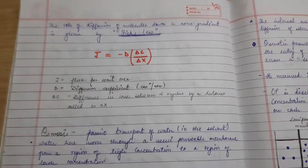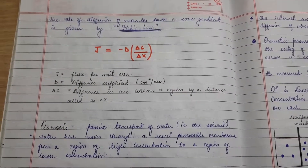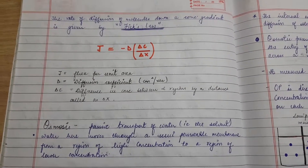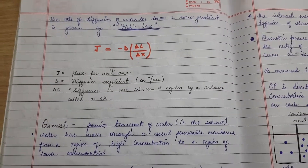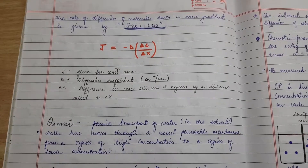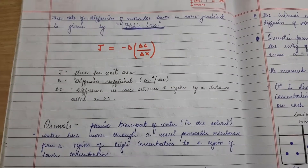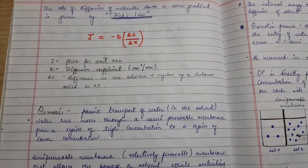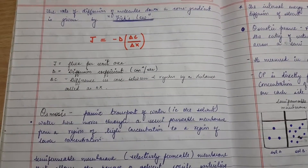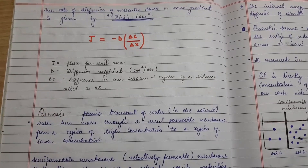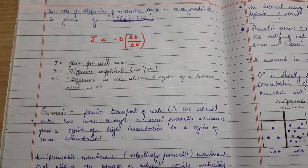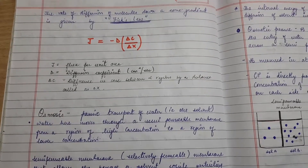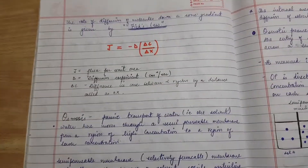The rate of diffusion of molecules down a concentration gradient is given by Fick's law: J = −D(ΔC/ΔX), where J is the flux per unit area, D is the diffusion coefficient expressed in units of concentration squared per second, ΔC is the difference in concentration between two regions, and ΔX is the distance between those regions.